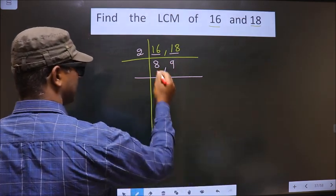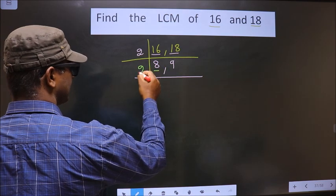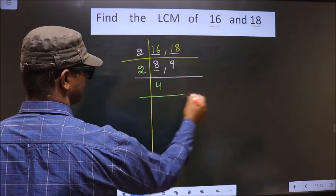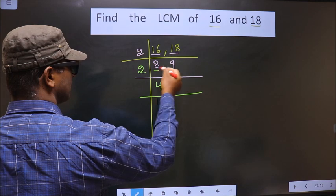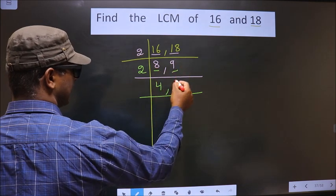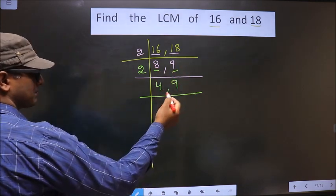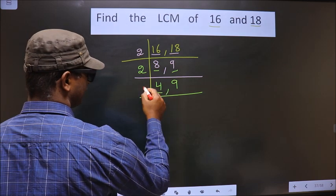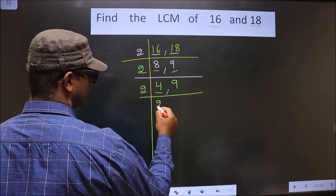Now here we have 8. 8 is nothing but 2 fours. 9 is not divisible by 2, so you write down 9 as it is. Now here we have 4. 4 is nothing but 2 twos.